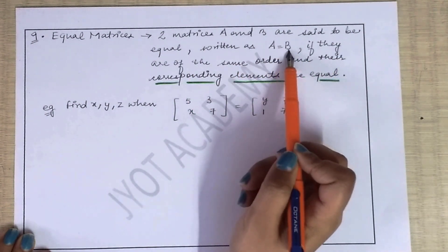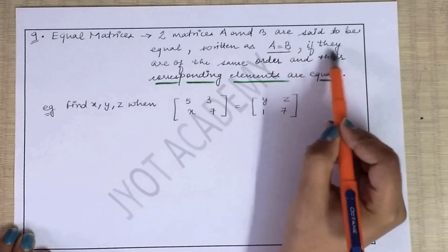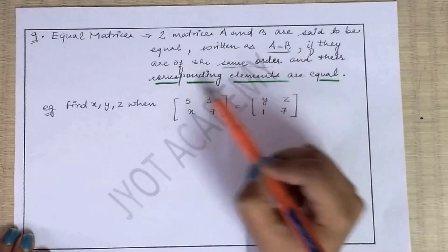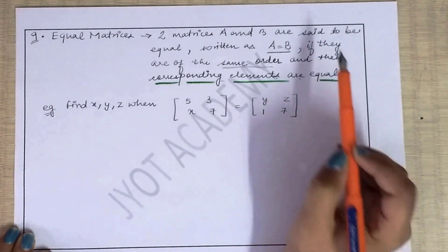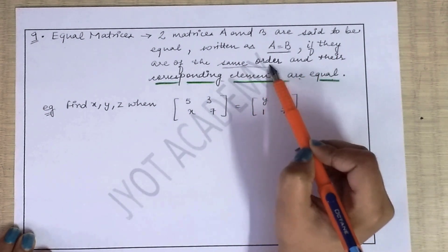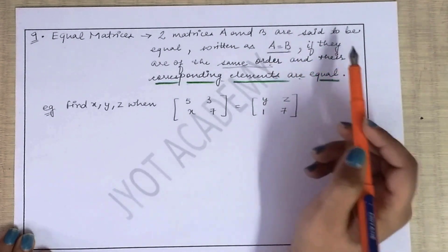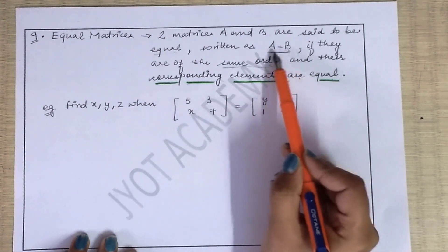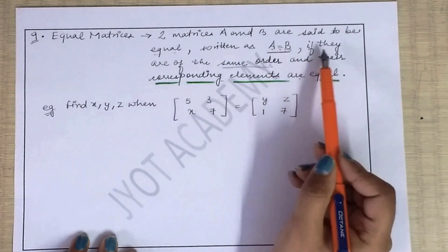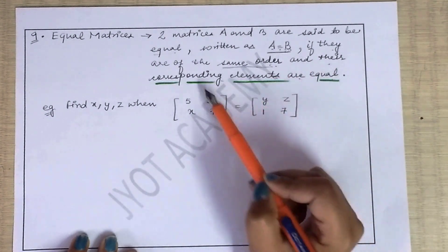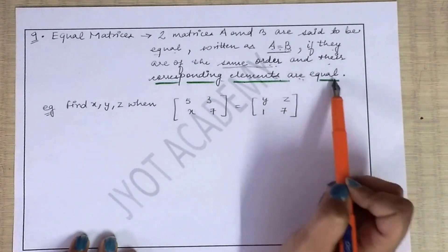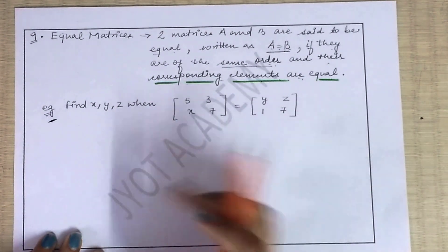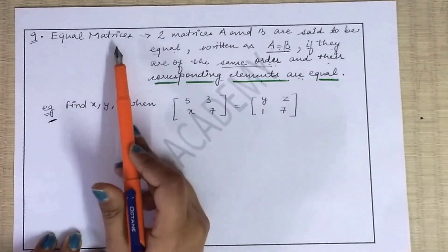Next aapka hai equal matrices. Two matrices A and B are said to be equal, written as A = B, tabhi ho sakta hai jab unka order same hoga and their corresponding elements equal hongi. Agar suppose A and B koi different matrices hain, toh wo equal tab hongi — A = B — jab unka order toh same hoga aur saath mein unki corresponding elements bhi equal hongi.